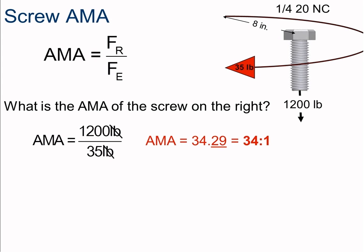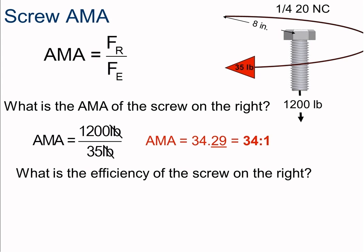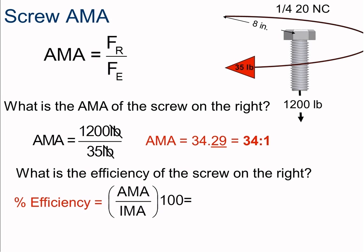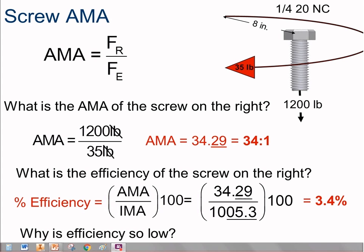Efficiency is the actual mechanical advantage divided by the ideal, times 100: 34.29 divided by 1,005, multiplied by 100, gives us only 3.4% efficiency. We lost quite a bit — and the question of why efficiency is so low is left for further thought. Thank you for watching this video on the simple machines family of inclined planes, including wedges, screws, ideal mechanical advantage, actual mechanical advantage, and efficiency.